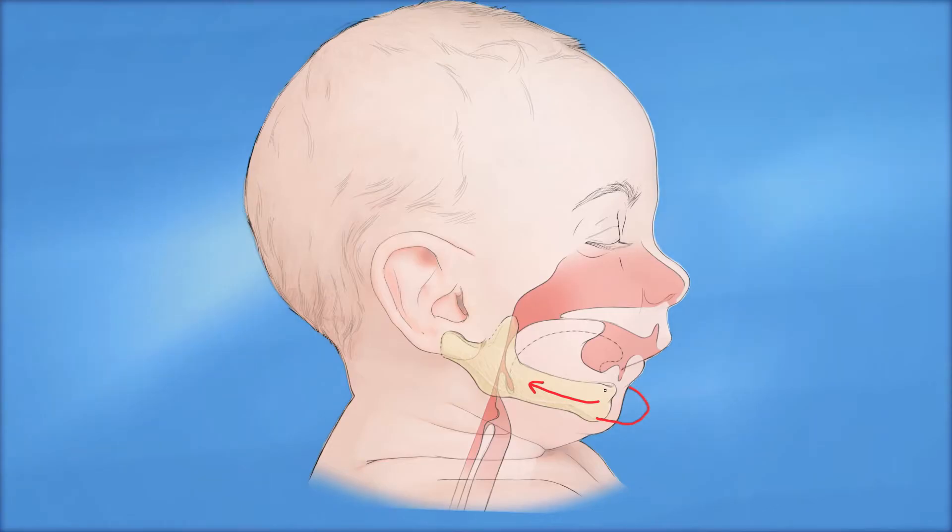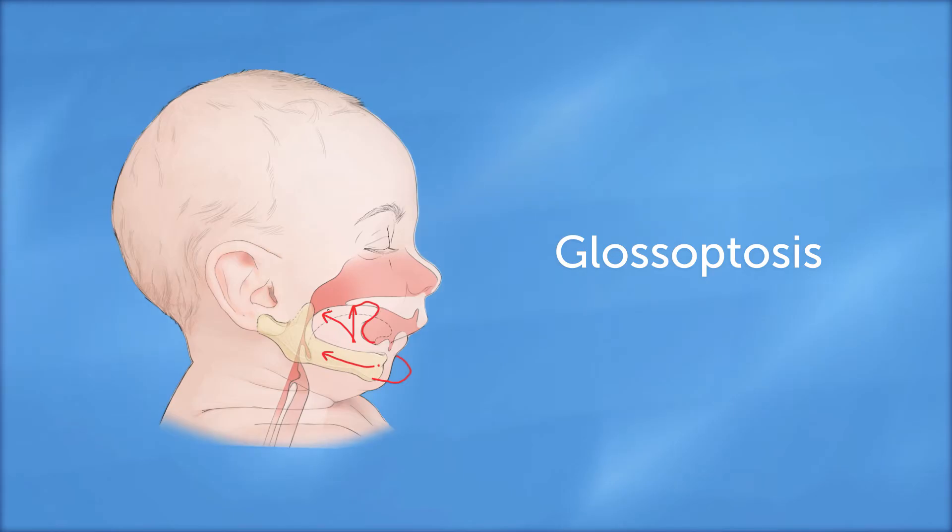As a result of this small jaw, there is not enough space for the tongue to sit normally in the floor of the mouth. Instead, the tongue is positioned at the roof of the mouth and backwards into the back of the mouth. This is called glossoptosis and is the second major feature of Robins Sequence.